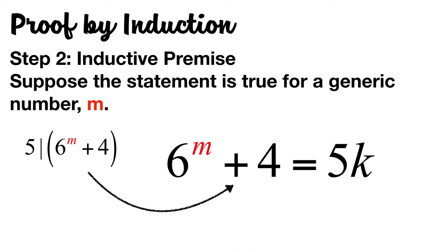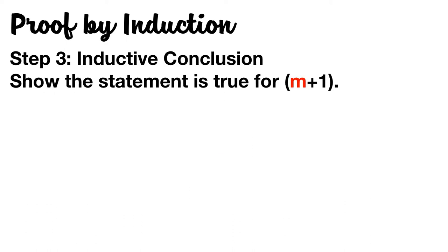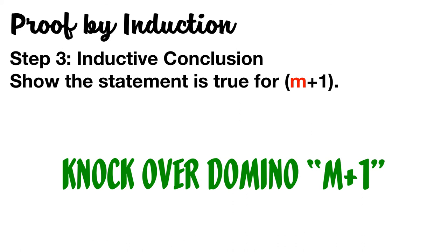So now that domino M has been knocked over, what happens to the next domino in the line? This is what's called the inductive conclusion. We want to show that the statement is true for M plus one. In other words, we want to be certain that domino M plus one topples.